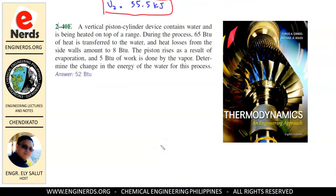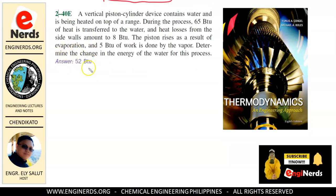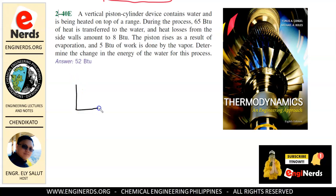Now let us go to the next problem, which is problem 2-40E from the same book. A vertical piston-cylinder device contains water and is being heated on top of a range. During the process, 65 BTU of heat is transferred to the water and heat losses from the sidewalls amount to 8 BTU. The piston rises as a result of evaporation and 5 BTU of work is done by the vapor. Determine the change in the energy of the water for this process. We already have an answer here, and we need to see how we arrive at it.